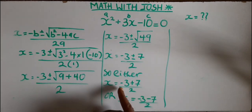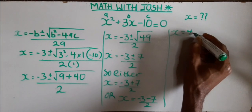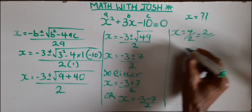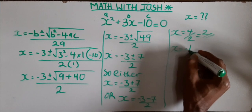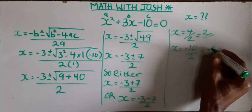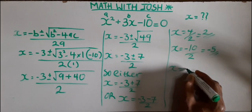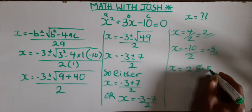And we go forth to simplify this. So minus 3 plus 7 we got 4, now 4 divided by 2 we have 2 as the first answer. Now going to the second one, minus 3 minus 7 we have minus 10 divided by 2 we have minus 5.